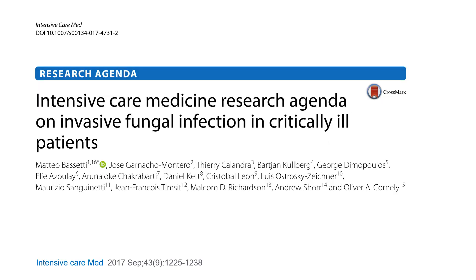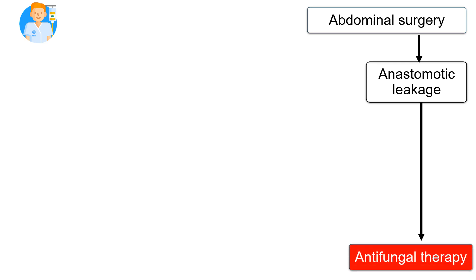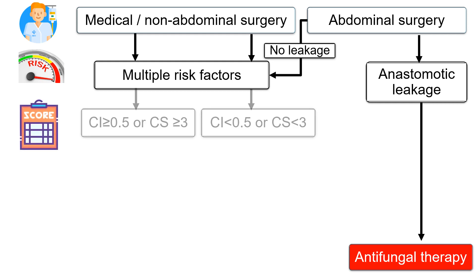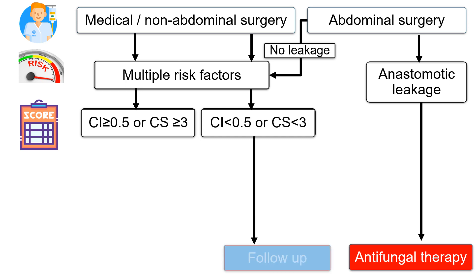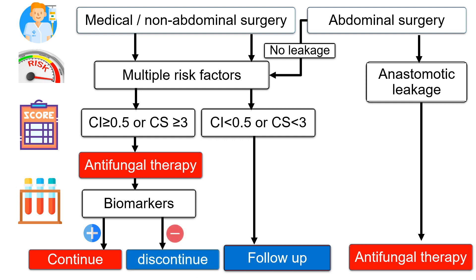One empirical therapy approach published in Intensive Care Medicine Research Agenda on Invasive Fungal Infection in Critically Ill Patients suggests: if the patient had abdominal surgery with anastomotic leakage, start antifungal therapy. For medical patients, non-abdominal surgery, or abdominal surgery without leakage, assess for multiple risk factors and calculate the colonization index or Candida score. If colonization index is less than 0.5 or Candida score less than 3, follow up; if greater, start antifungal therapy. Then check biomarkers: if positive, continue antifungal therapy; if negative, discontinue.